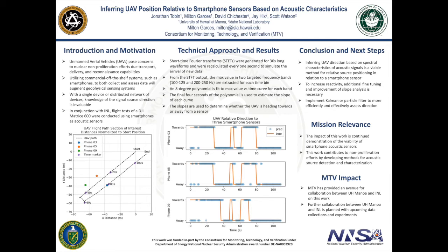The slopes are then used to determine whether the UAV is heading towards or away from the sensor. An increase in the slope typically means the power in that frequency band is increasing, and thus we assume the UAV is moving towards the phone. The opposite is true for a decreasing slope.